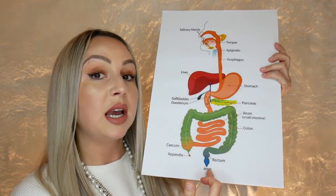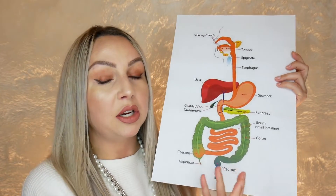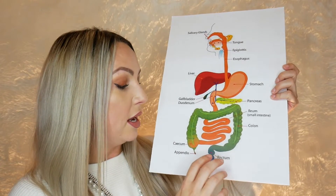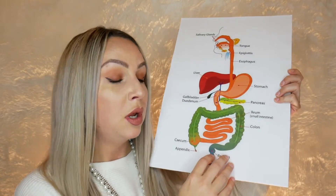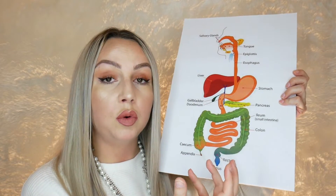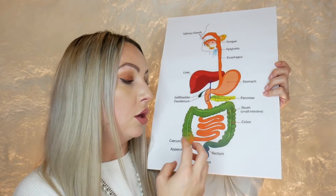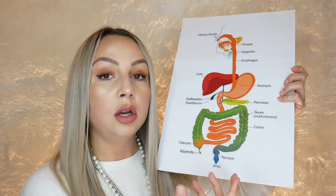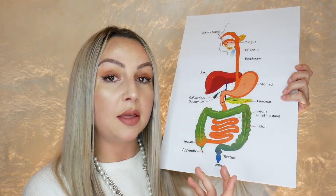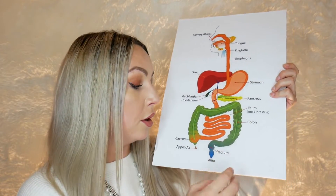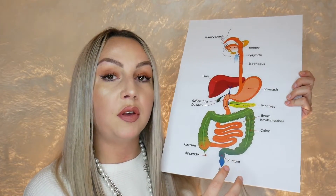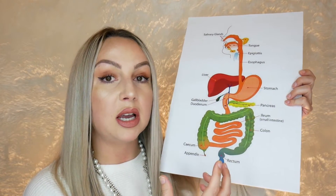An important point about ulcerative colitis is that because it affects the large intestine, people can actually live without it. Surgeons can remove the whole colon and create a stoma — where the small intestine is brought out onto the abdomen and you collect fecal matter in a bag. They can often leave part of the colon if there's ever a possibility of reattachment.